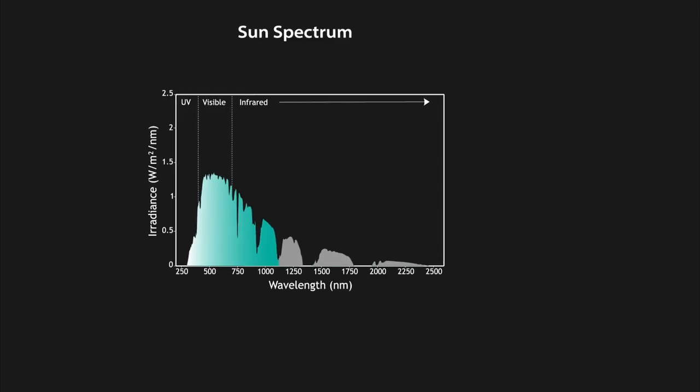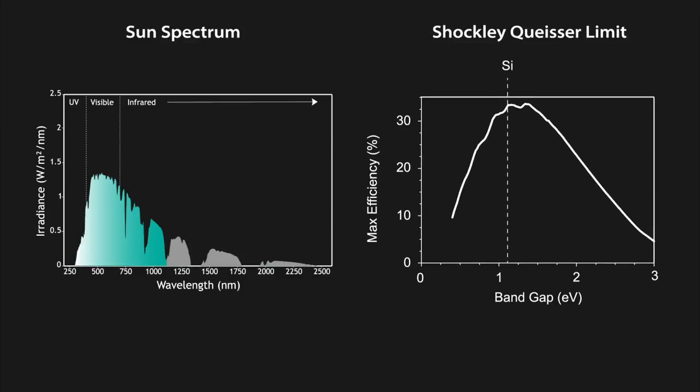We can calculate the optimum band gap for the sun. This is called the Shockley-Quisser Limit, and gives a band gap of around 1.3 electron volts. This is pretty close to silicon, and has an efficiency of around 33%.